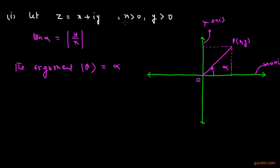In this condition, where both x and y — that is, both the real part and imaginary part — are positive, the argument θ will be equal to α, where α is the acute angle satisfying tan α = |y/x|.